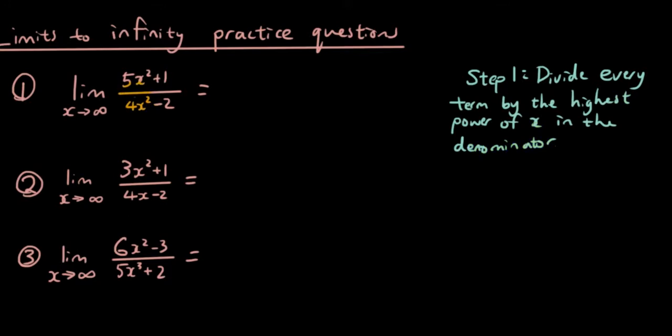Well, if we have a look at the denominator of the fraction, which is the bottom of the fraction, the highest power of x is x². So what we're going to do is, we're going to divide every single term in this fraction by x². So it's 5x² divided by x² plus 1 divided by x² over 4x² divided by x² minus 2 divided by x².